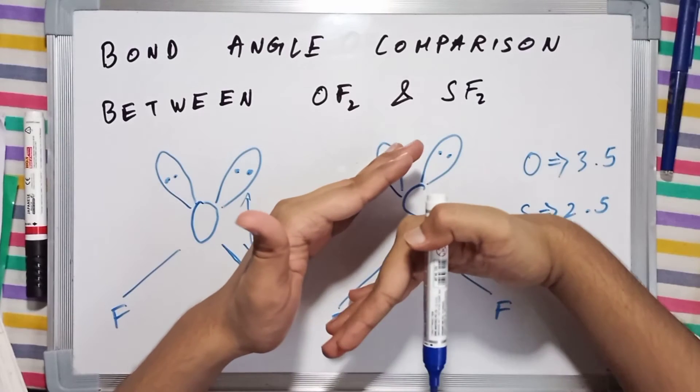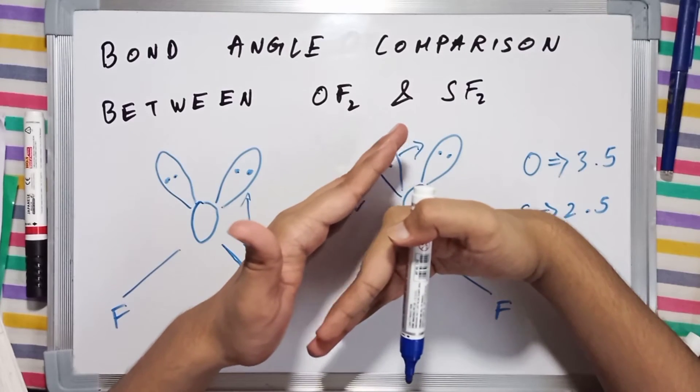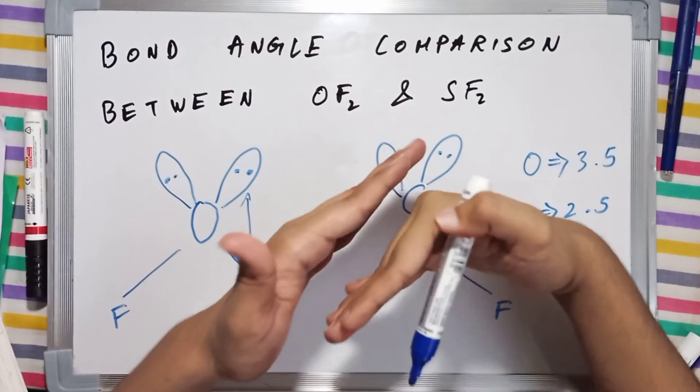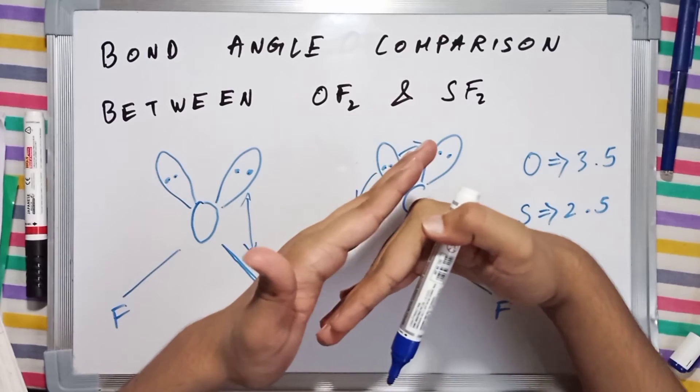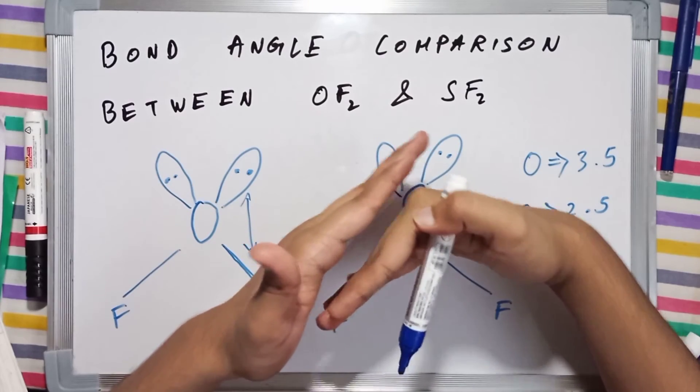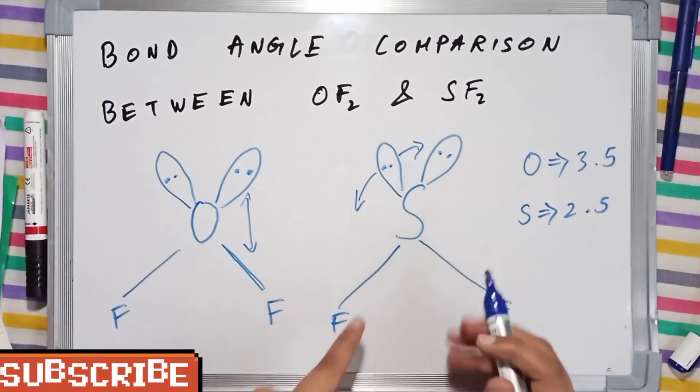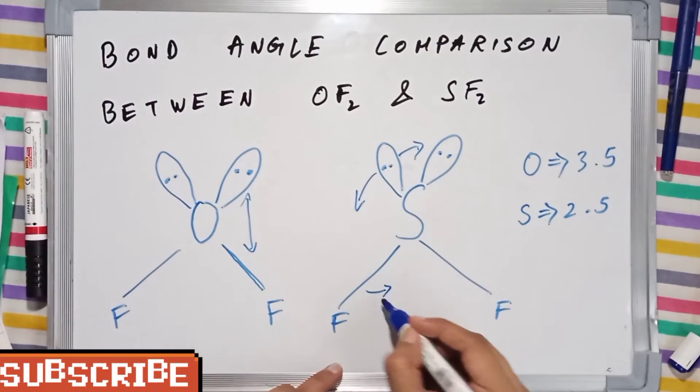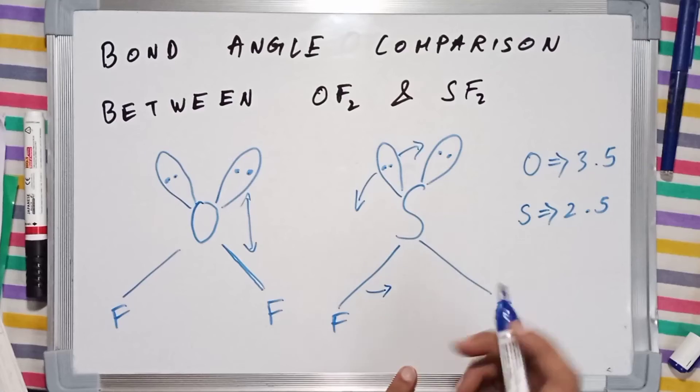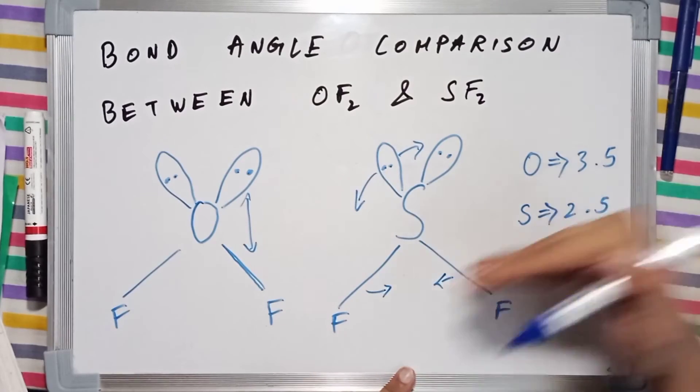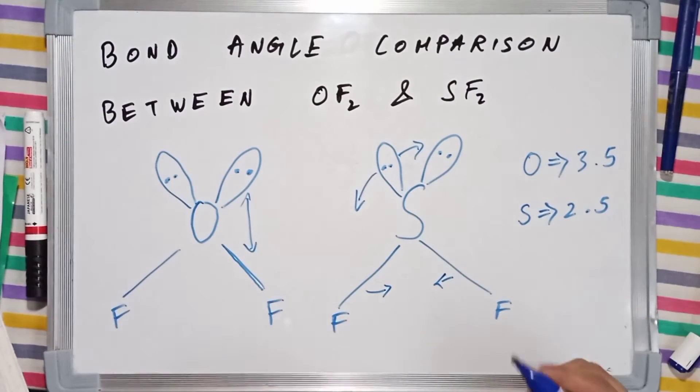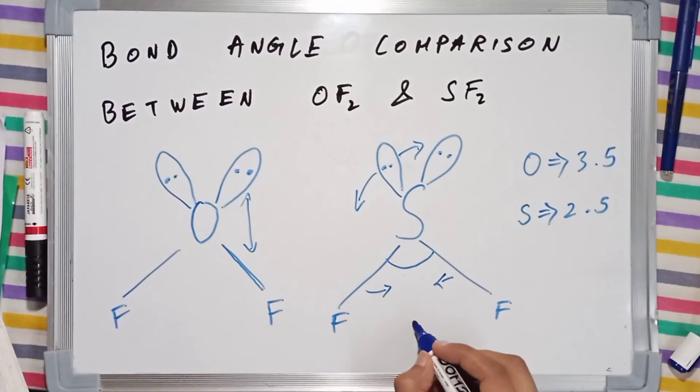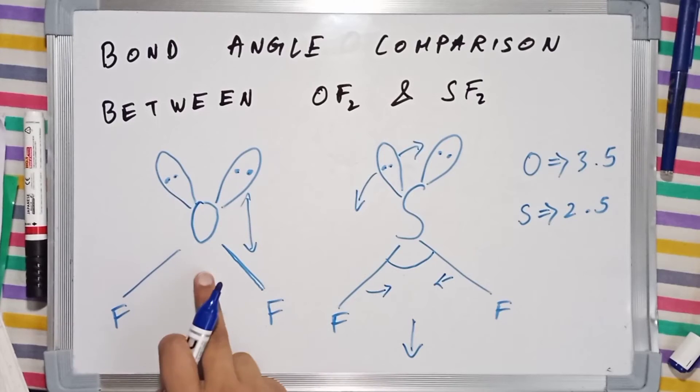and this bond is here, they will face a repulsion. This bond will move towards this side, whereas this bond will also move towards this side. They will go like this, and the bond angle in SF2 will be much lower than the bond angle in OF2.